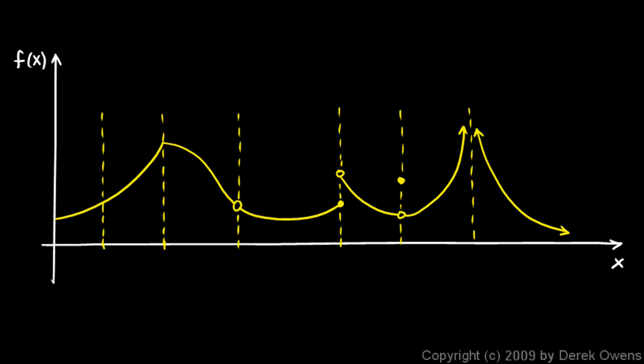We'll illustrate this by taking a look at this function. Here's f of x sketched in yellow, and certain x values are marked along the way. We'll look at each of these and talk about whether the function is continuous or differentiable or not at those points. You might not ever actually encounter a function exactly like this one, but this will illustrate the concepts.